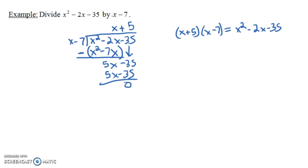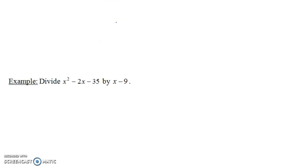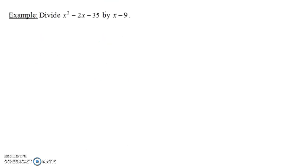But what if I had changed this? Instead of being x minus 7, what if this had been x minus 9? So divide x squared minus 2x minus 35 by x minus 9. In this case, we're going to get a non-zero remainder, because x minus 9 is not actually a factor of this original polynomial.